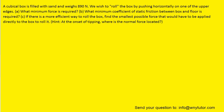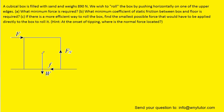Our first step would be to draw the forces that are acting on the cubicle box. At the center of the box, we have the weight force acting downward. We have the applied force that's trying to push or roll the box forward. Where the box and surface are contacting each other, there's going to be two forces: the frictional force that's opposing the applied pushing force, and the normal force of the ground pushing up on the box.